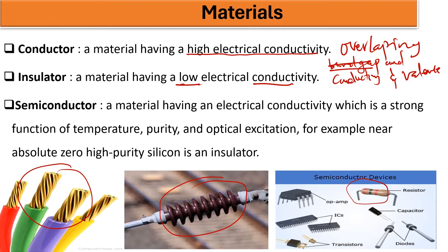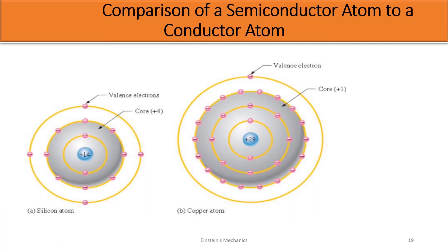Now let's compare something. We are looking at the comparison of a semiconductor atom to a conductor. We know that conductors conduct easily, and semiconductors are medium. We are choosing a silicon atom, which is a semiconductor, and a copper atom, which is a conductor. Why is it that the copper atom is able to conduct so much faster as compared to silicon?